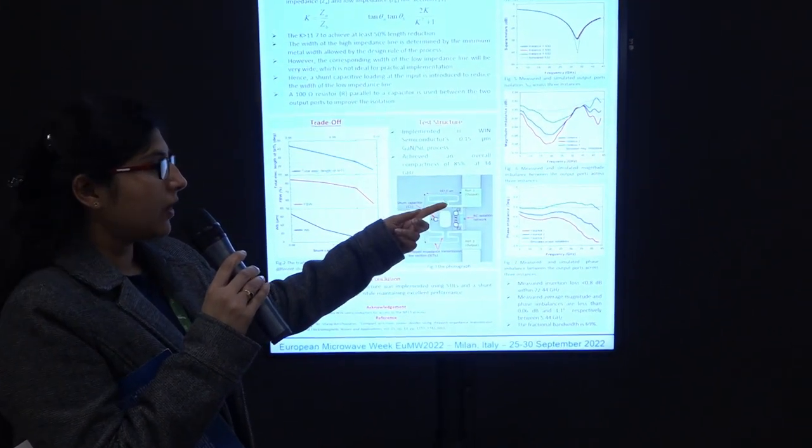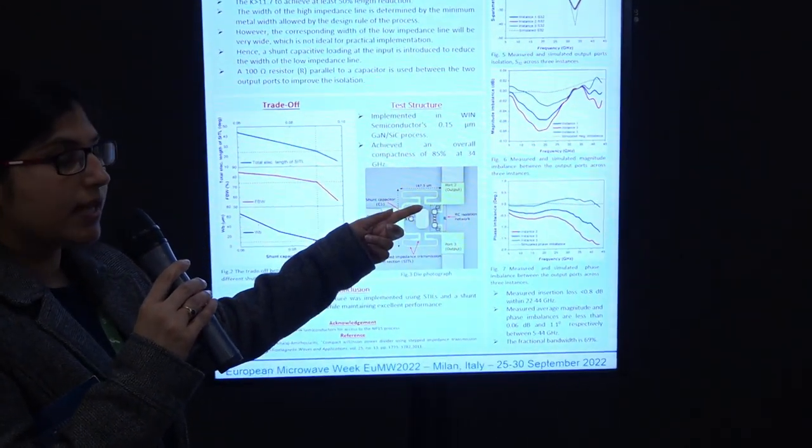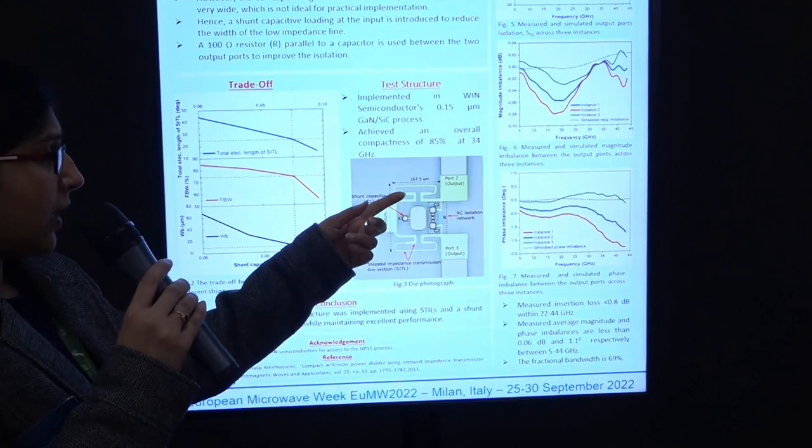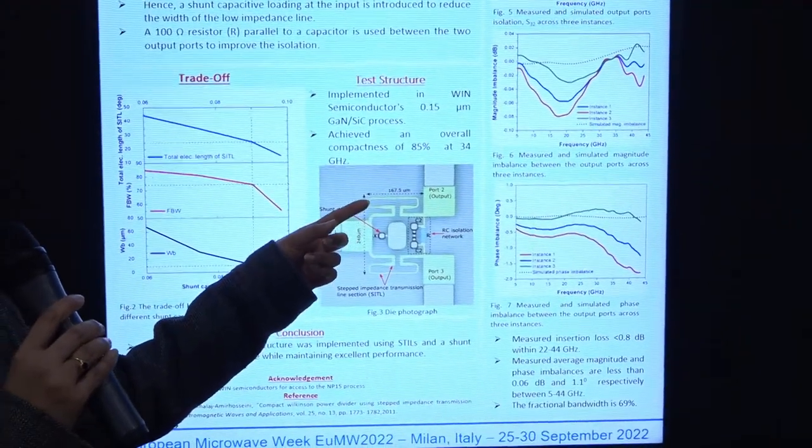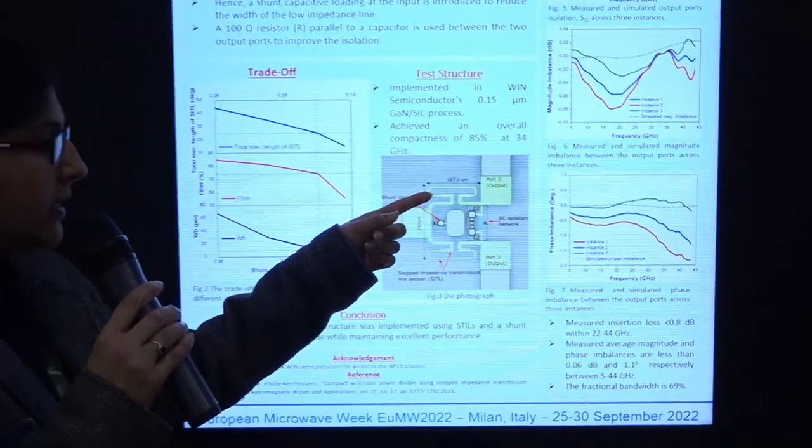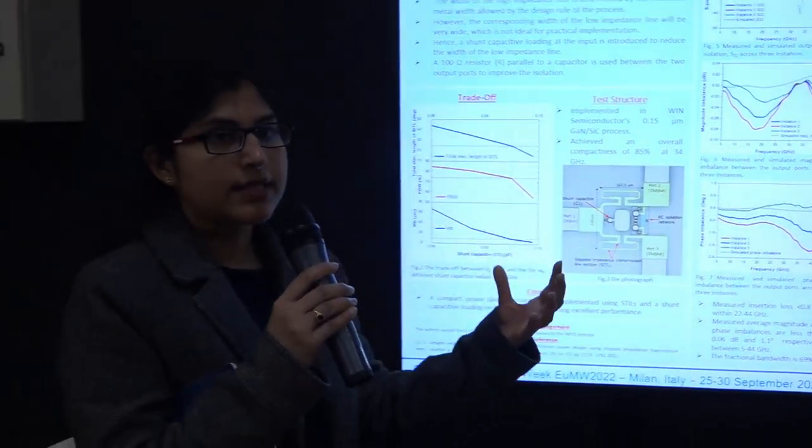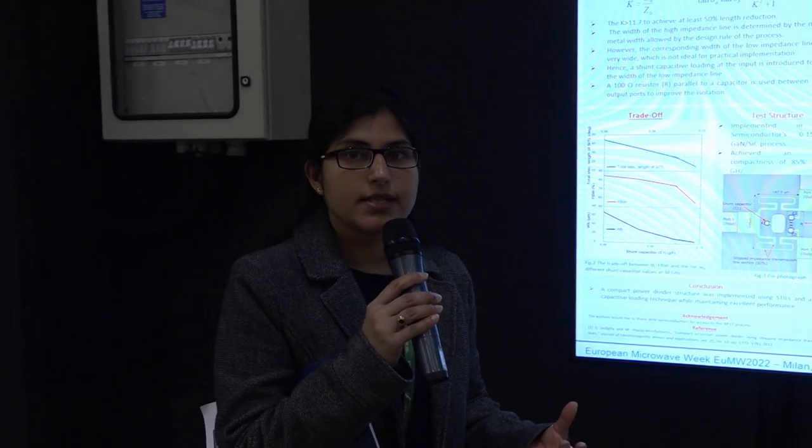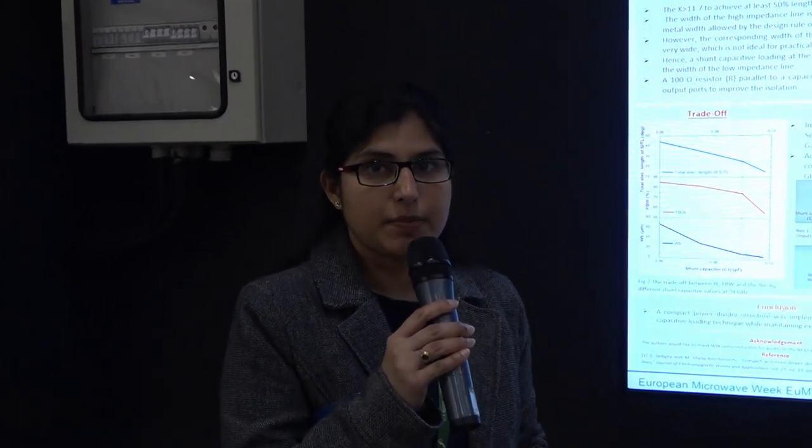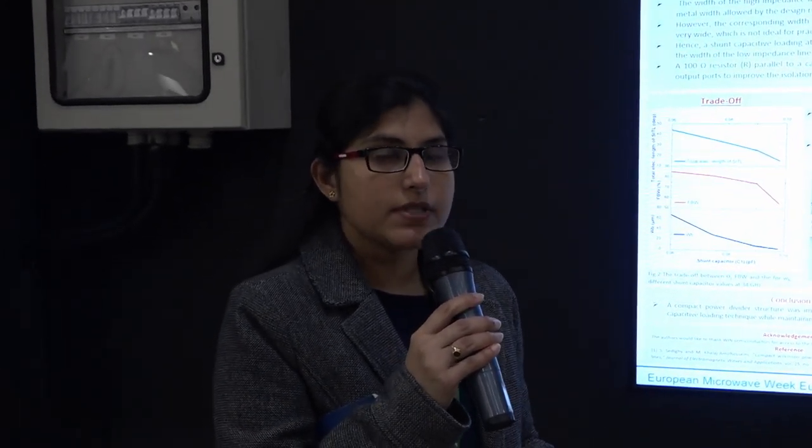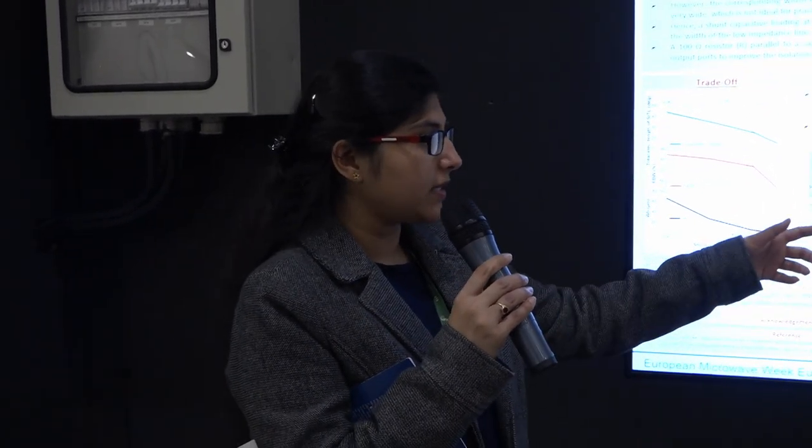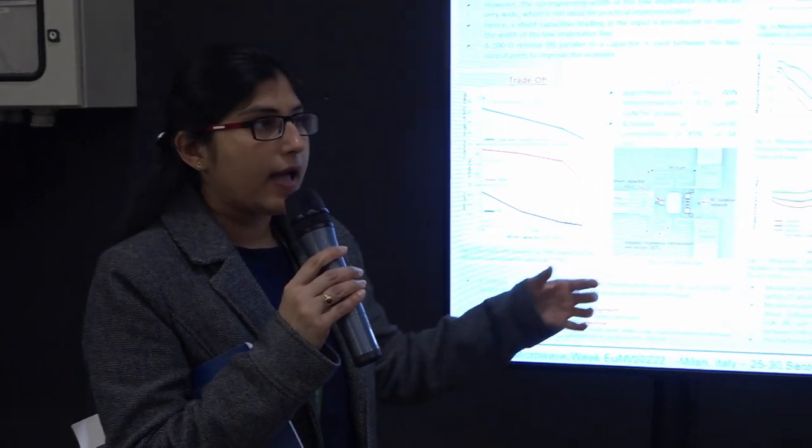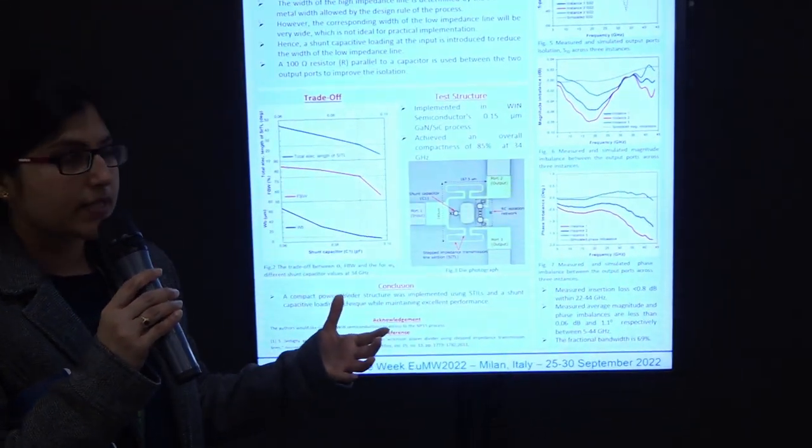You can get certain amount of compactness from the stepped impedance lines. However, there is a foundry design rule limit as to how narrow the lines can be. So that limits the compactness you can get. We are using a second method, which is the shunt capacitive loading at port 1, and that gives us further compactness.